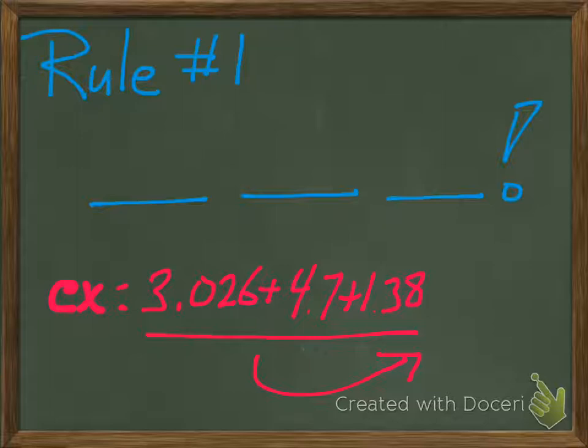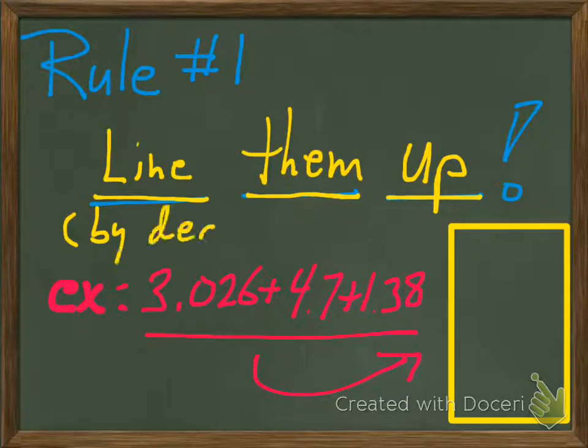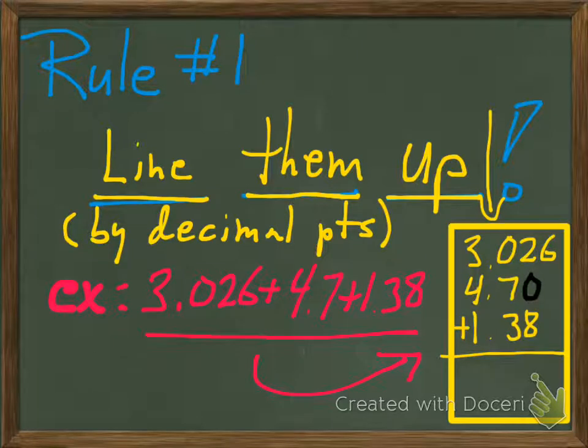Rule number one is, if we're going to be adding a couple of decimals together, there are three very important words that are going to be very helpful in setting up the problem so that we can be successful. The last word is up, and the trick is to line them up by the decimal points.